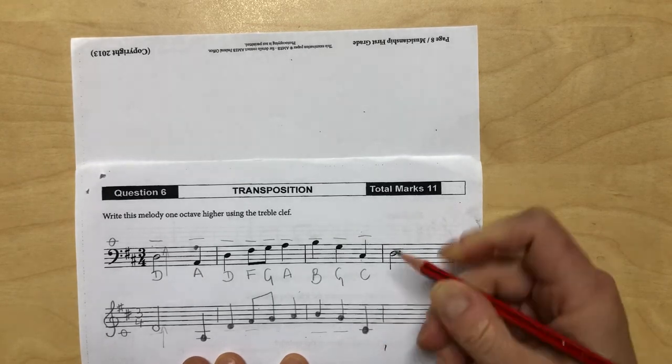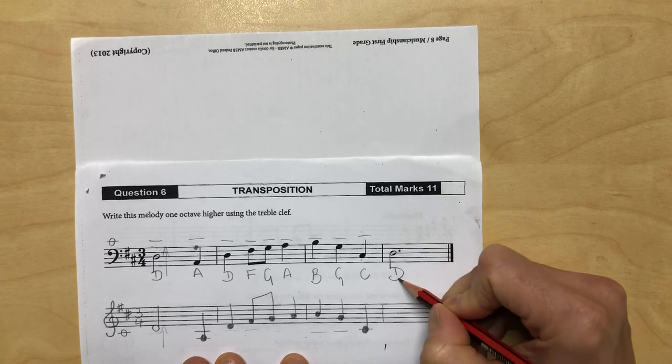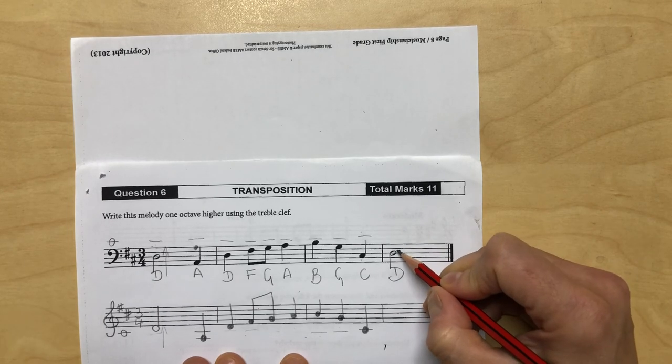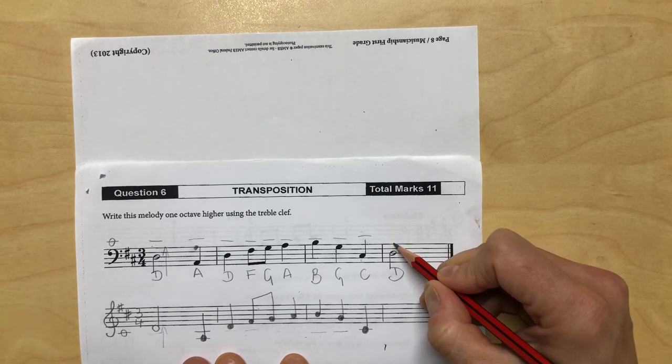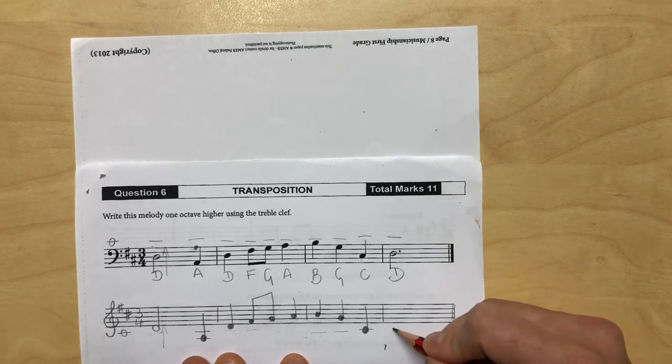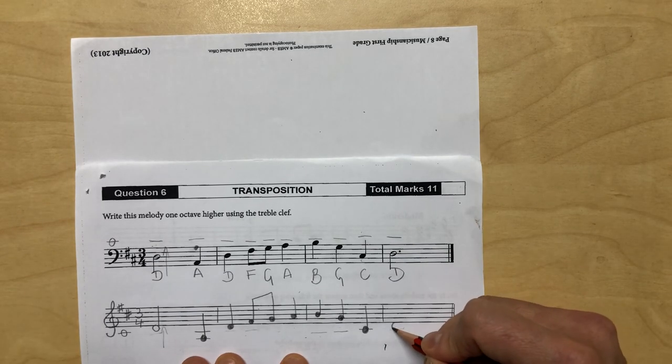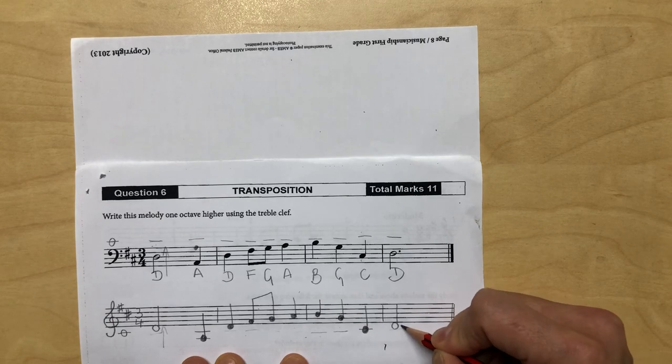And the last one is a D. One, two, three, four, five, six, seven is middle C, seven is middle C. There's your D. All done.